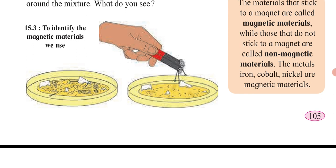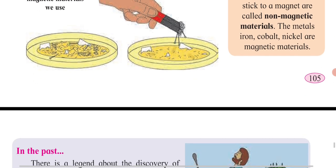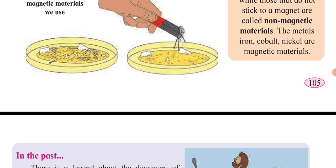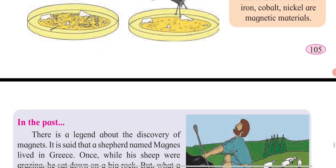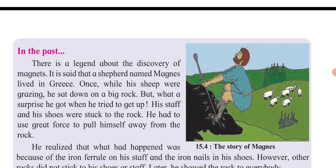In this experiment you can see two Petri dishes — in one, iron filings and pins have been placed. When the magnet is brought near, all the iron filings and pins get attracted towards the magnet. The remaining part is only the paper base. So iron filings and steel pins are magnetic materials, but paper is a non-magnetic material.